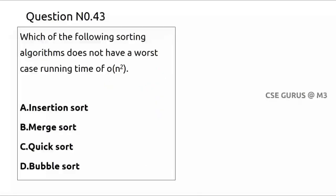Question 43: which sorting algorithm does not have a worst-case running time of O(n²)? Insertion sort worst case is O(n²). Merge sort is always O(n log n) regardless of input. Quick sort worst case is O(n²), best case O(n log n). Bubble sort is O(n²) worst case, O(n) best case. Merge sort always gives O(n log n), so option B is the correct answer.